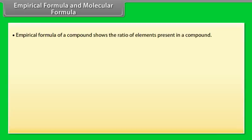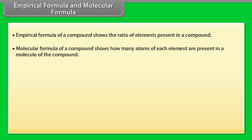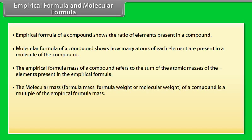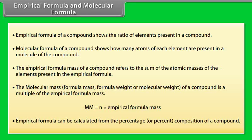Empirical Formula and Molecular Formula. The empirical formula of a compound shows the ratio of elements present in the compound. The molecular formula shows how many atoms of each element are present in a molecule. The empirical formula mass is the sum of atomic masses of elements in the empirical formula. The molecular mass is a multiple of the empirical formula mass: MM = N × empirical formula mass. The empirical formula can be calculated from the percentage composition of a compound.